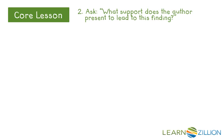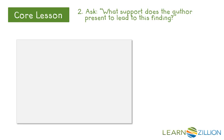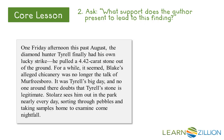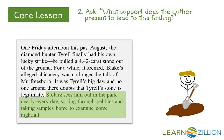Now I want to see the explanation the author presents in order to support his findings. As his concluding sentence, the author writes: "Stollert sees him out in the park nearly every day sorting through pebbles and taking home samples to examine come nightfall." The author supports his answer by providing proof that Tyrell can actually be seen working on a daily basis by the park official. On the other hand, Blake is only known to the park official to visit occasionally and has very little contact with him.